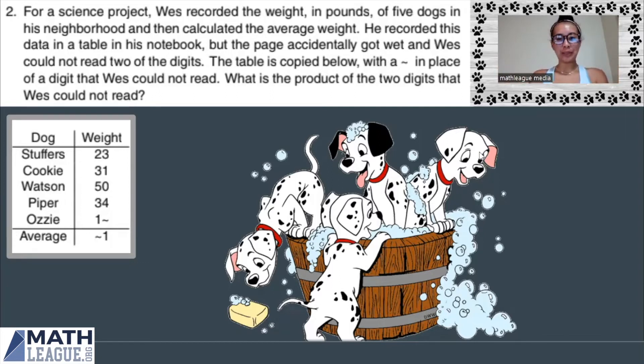For a science project, Wes recorded the weight in pounds of five dogs in his neighborhood and then calculated the average weight. He recorded this data in a table in his notebook, but the page accidentally got wet and Wes could not read two of the digits. Puppy bath got a little bit rambunctious. The table is copied below with a tilde in place of a digit Wes could not read. What is the product of the two digits in the table that Wes could not read?